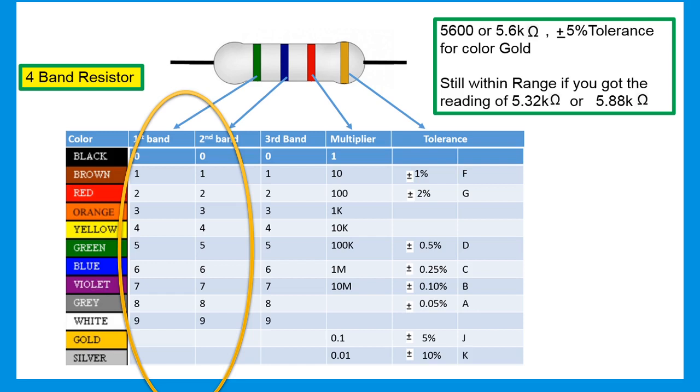In a four-band resistor, the first two digits represent a significant figure, the third represents multiplier, and the fourth indicates tolerance.